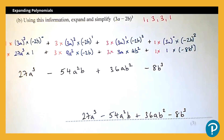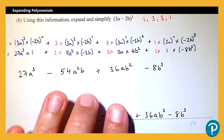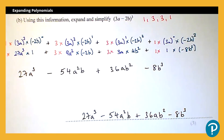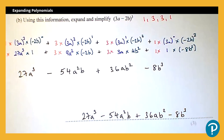Just like before, this is worth 3 marks for a fully correct answer. We'd need 3 of the 4 terms correct for 2 marks, and if we've correctly substituted but don't have three correct terms, we can still get 1 mark. Thank you very much.